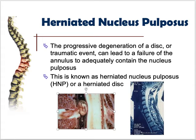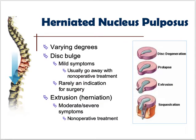In herniated nucleus pulposus, there is disc degeneration, prolapse, and extrusion with sequestration. If there is just a disc bulge, the patient will present with mild symptoms that usually go away with non-operative treatment and surgery is rarely required. But when there is extrusion — when the disc material comes completely out — the condition becomes quite serious with moderate to severe symptoms, and most of the time operative treatment is required.